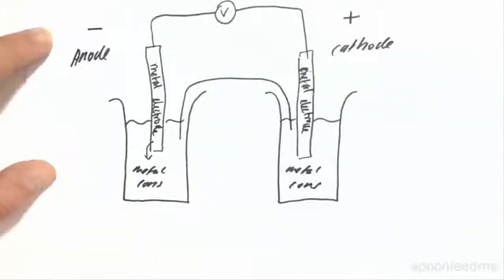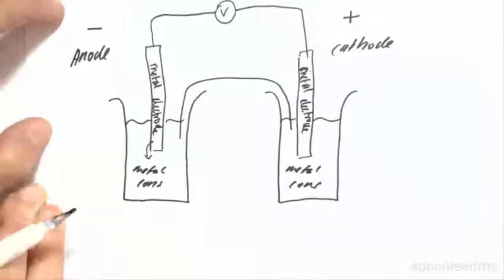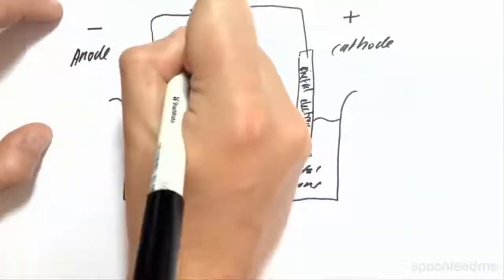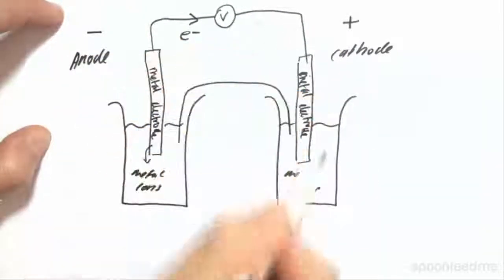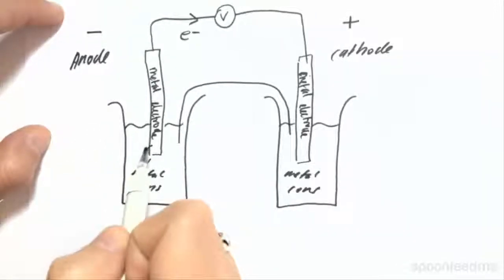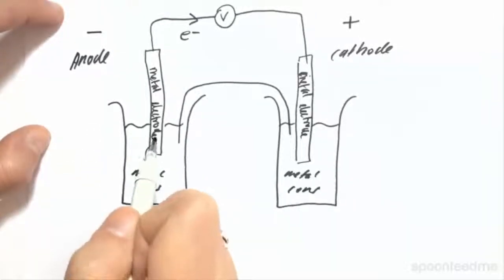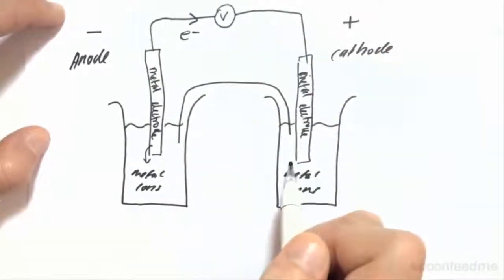Between these two is a voltmeter, which measures the voltage that's produced. This voltage tells us how strong this driving force is. The driving force is electrons moving from the anode to the cathode — you have a net movement of electrons along this wire from the anode to the cathode. This is logical because the anode is releasing electrons since oxidation is occurring here, and the cathode is absorbing electrons because reduction is occurring here.